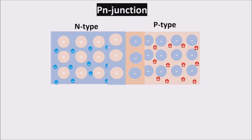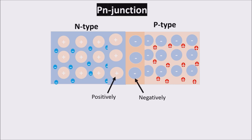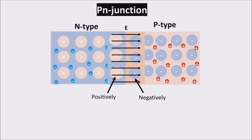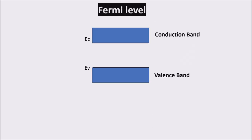This depletion area has no carriers, but it is electrically charged because diffusion has charged the P-junction negatively and the N-junction positively. Because of this charge distribution, an electric field is formed, creating a potential barrier which prevents free electrons in the N-type from going into the P-type, and holes in the P-type from going into the N-type. In order to calculate this potential, we should first see the energy band diagram of this junction. The probability of occupation of energy levels in the valence band is called the Fermi level.